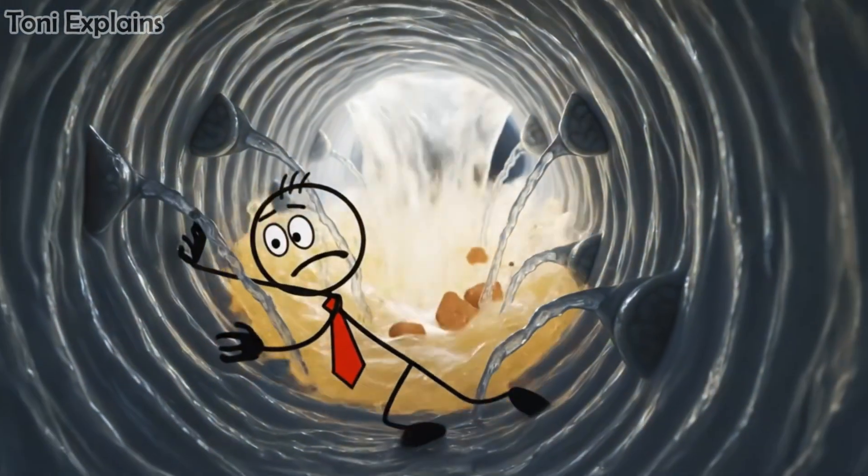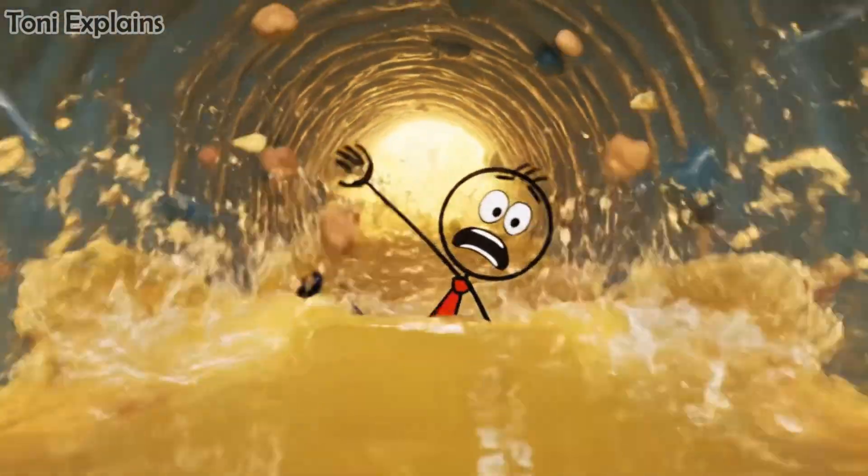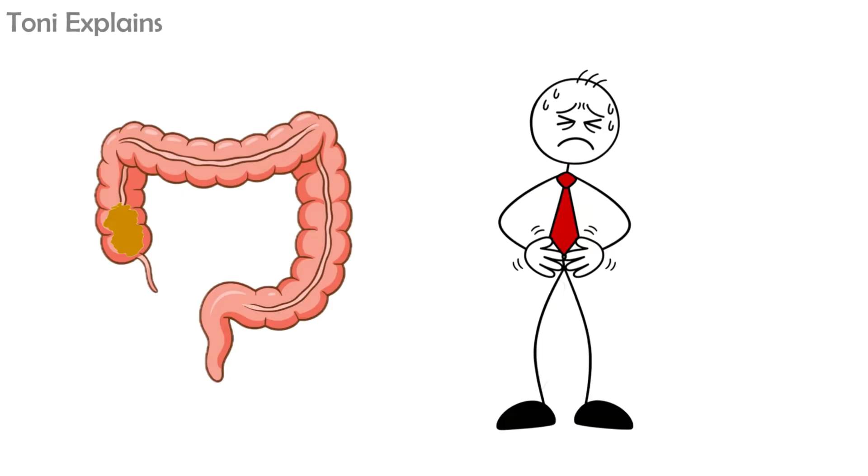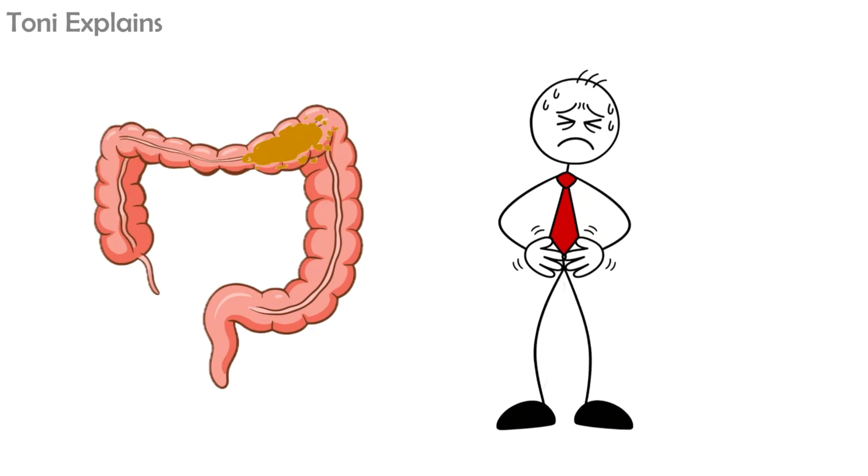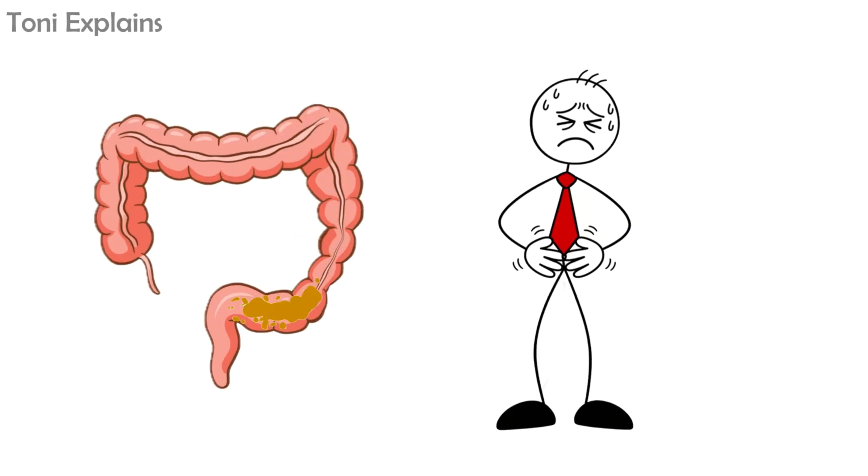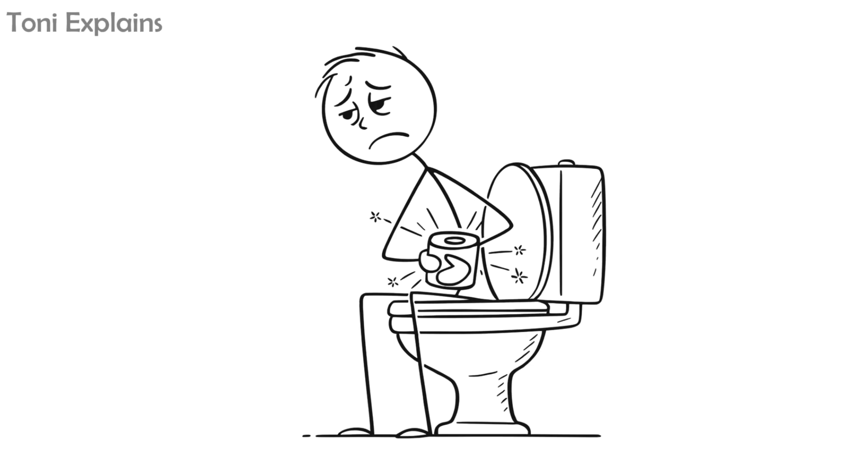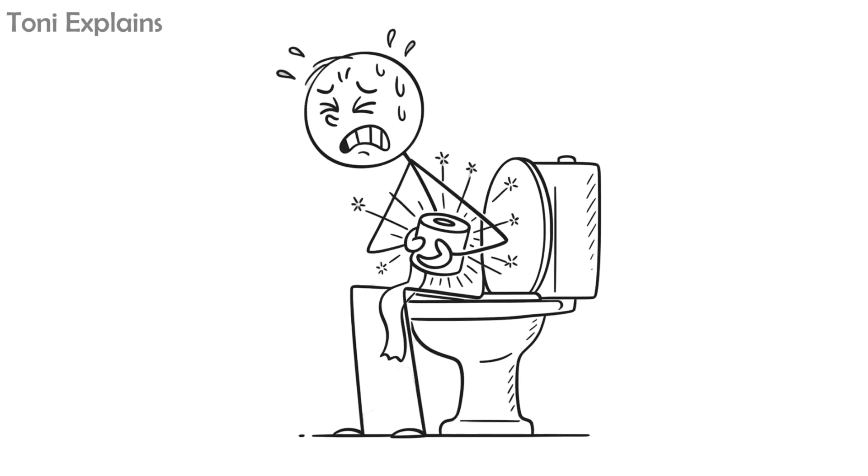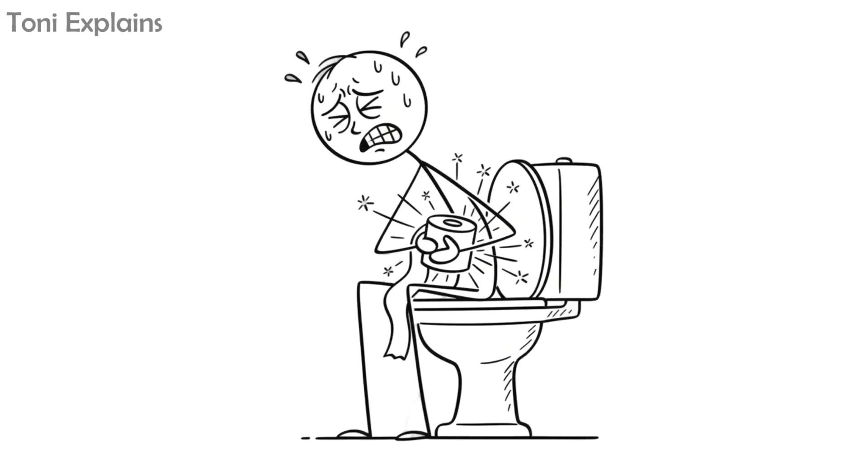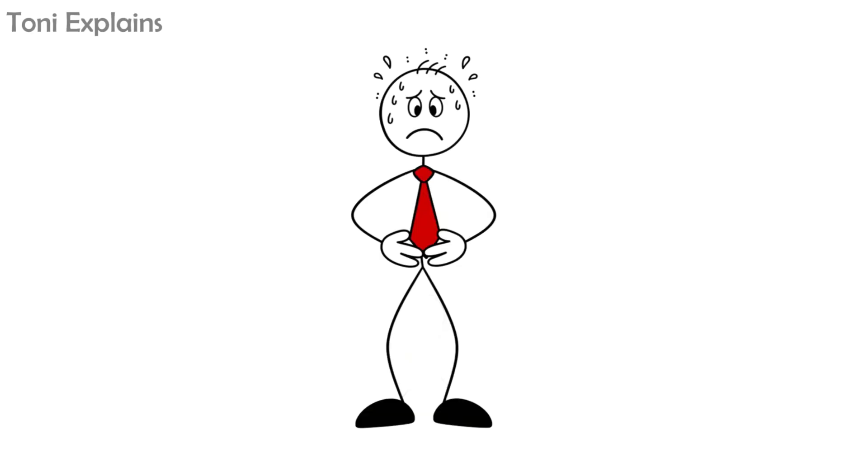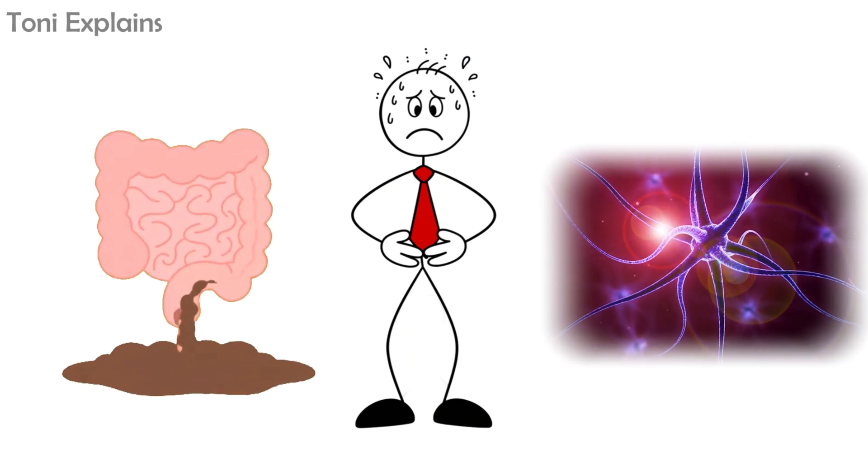Glands along the intestinal walls begin secreting extra fluid to flush out the toxins. The muscles of your gut start to contract more rapidly, pushing the contents forward at high speed. The result is watery stool that moves through before your body has time to reabsorb water. That's diarrhea, and the pain that comes with it is caused by those intense repeated muscle contractions and the overstimulation of your gut's sensitive nerves.